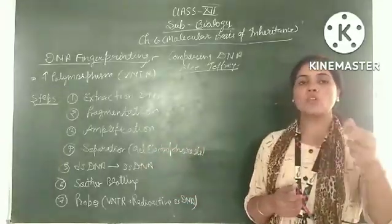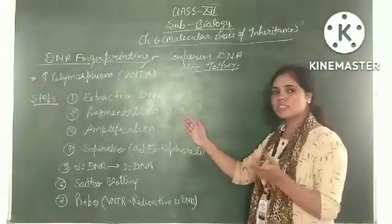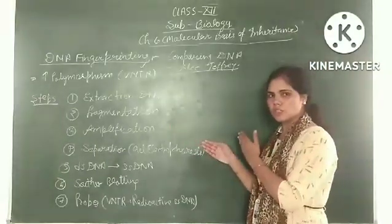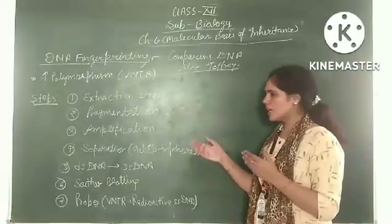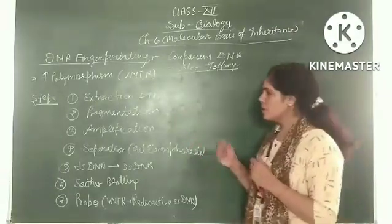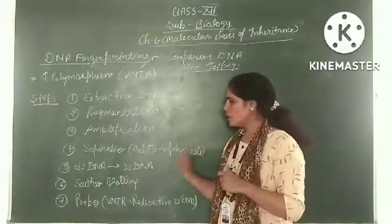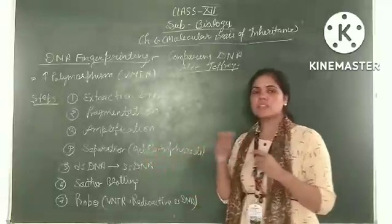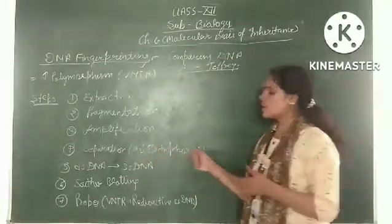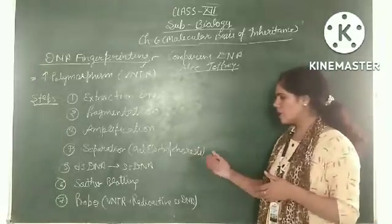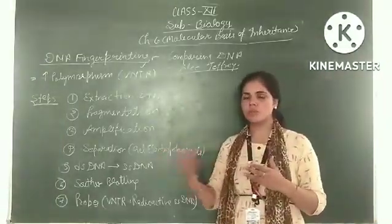Amplification means making many copies of that particular fragment. For the amplification, we can use the technique PCR — polymerase chain reaction — or we can use the biotechnology process to make recombinant DNA. After making multiple copies, we need to separate the fragments according to their size. For that separation, we use the technique gel electrophoresis, which separates DNA fragments according to molecular size.